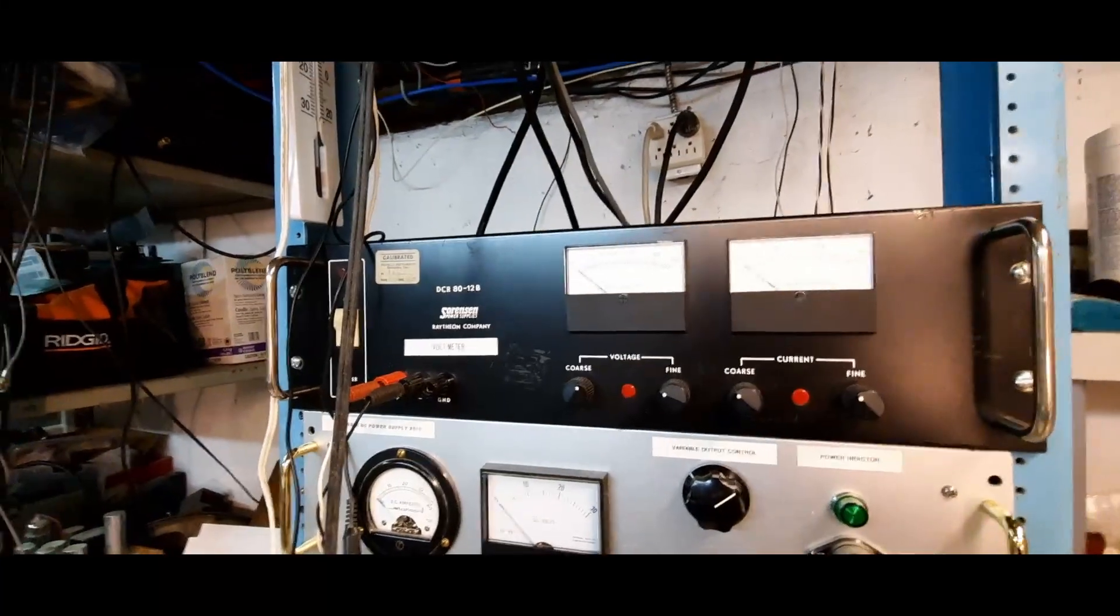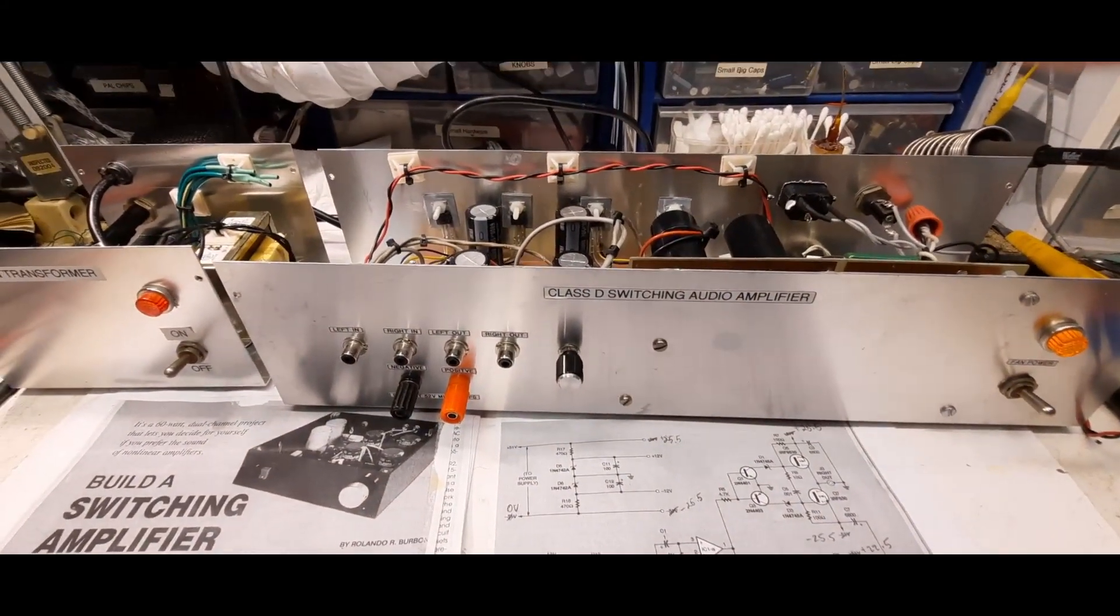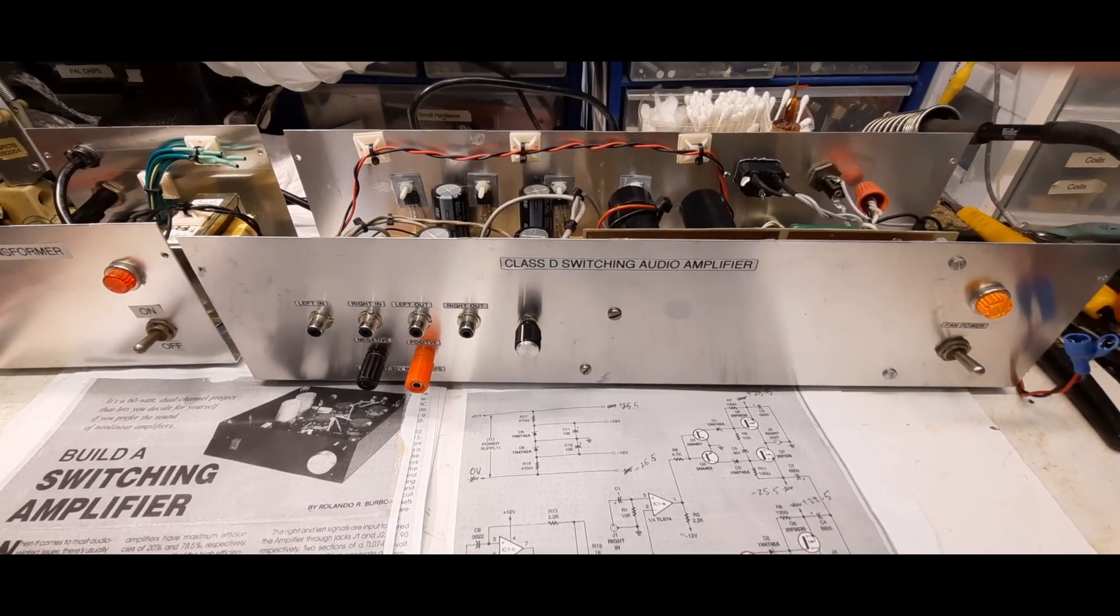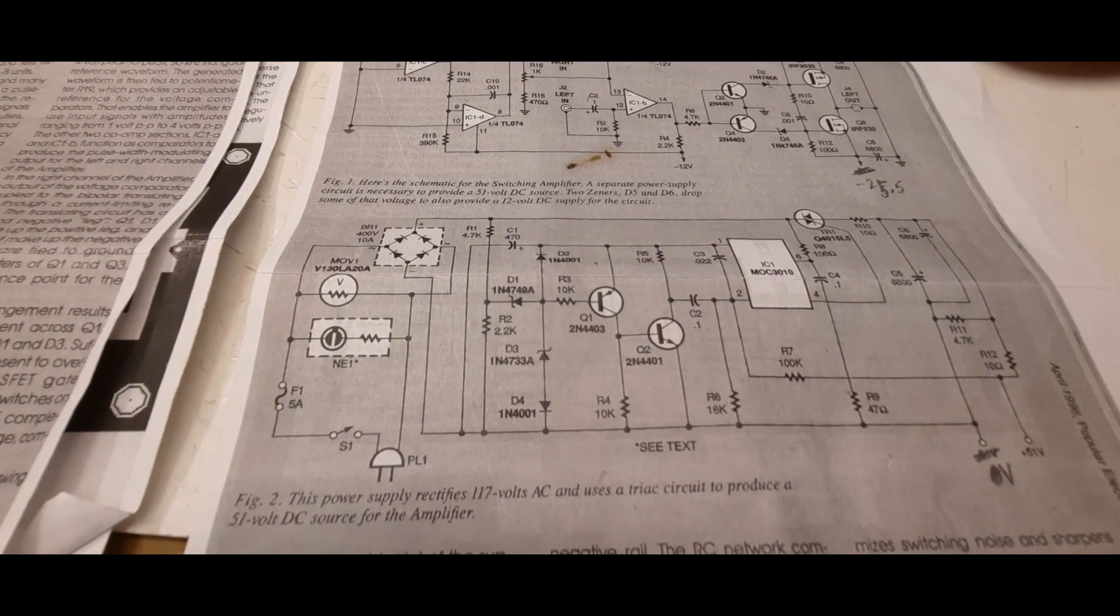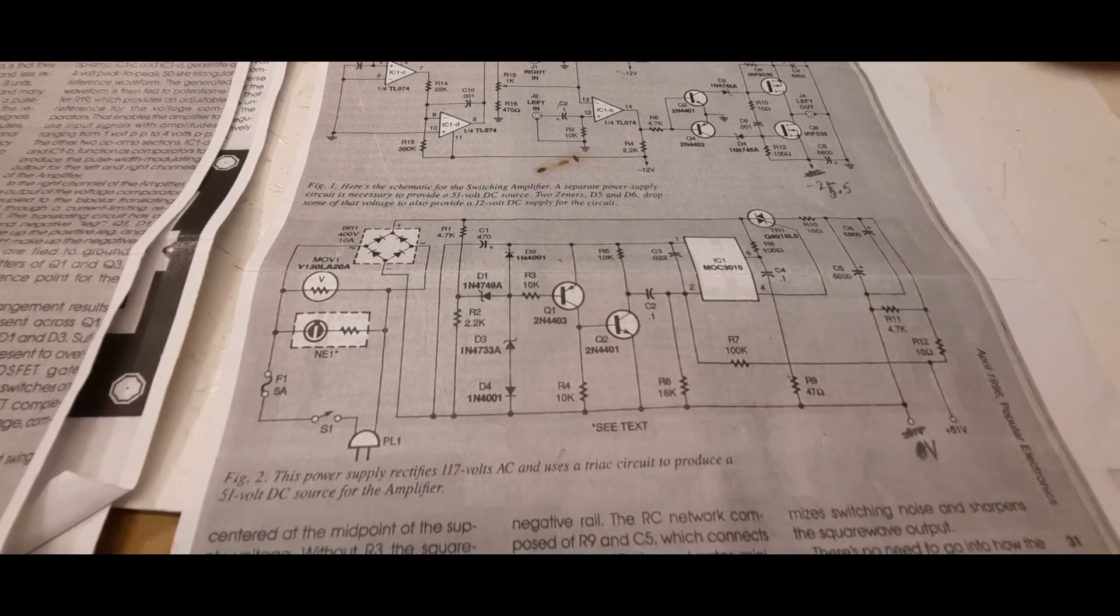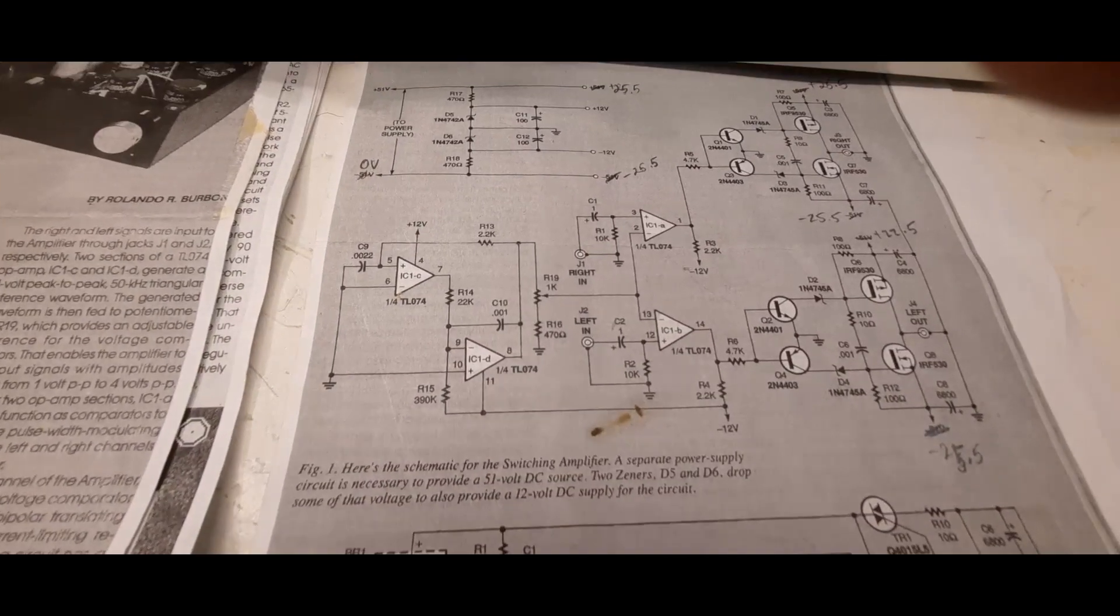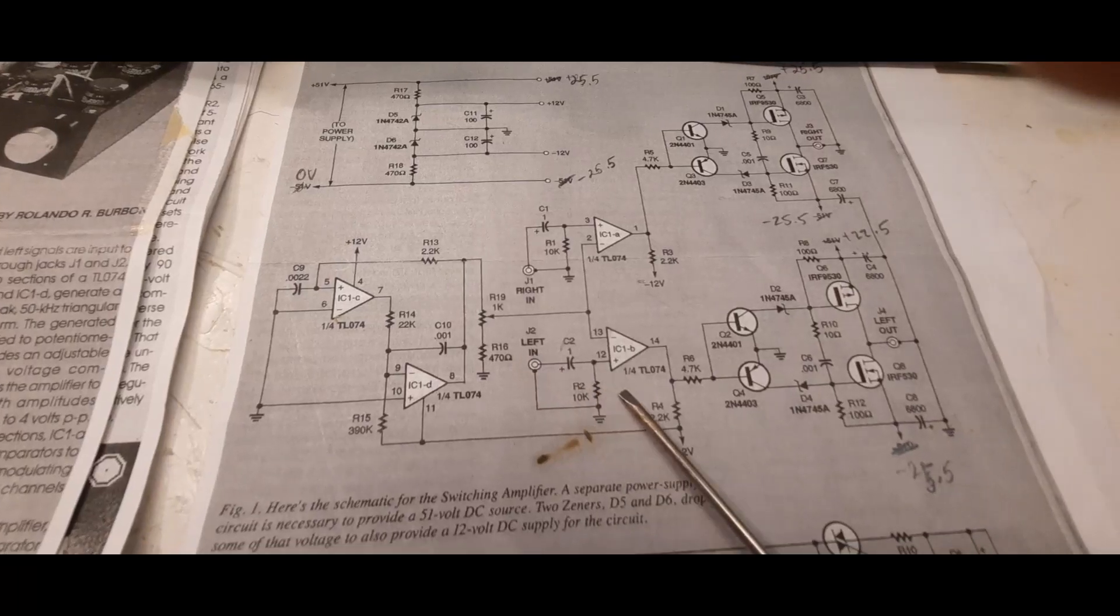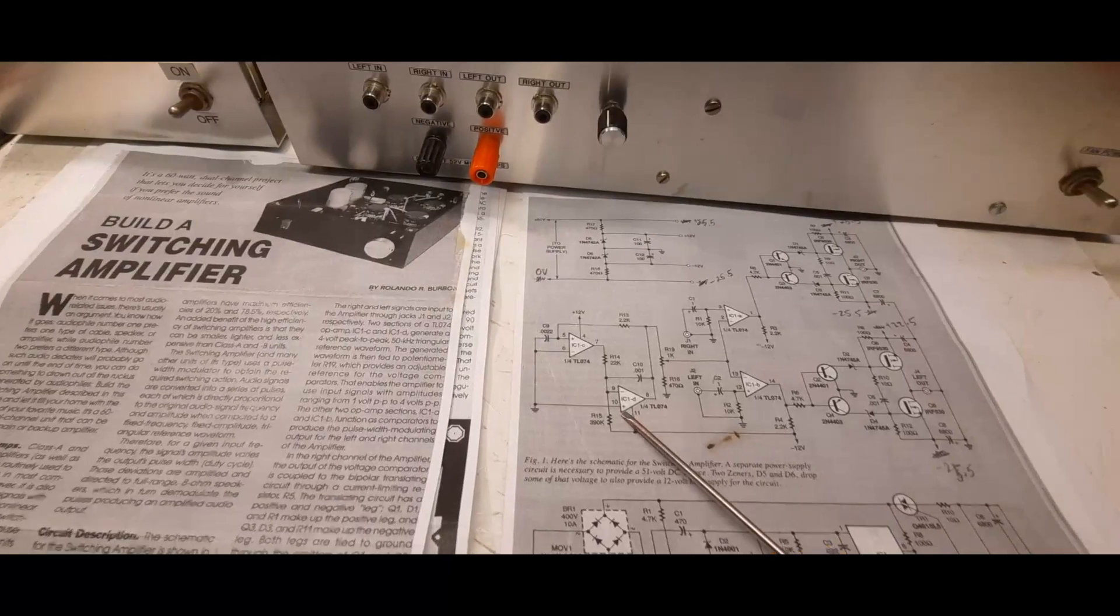I think it draws about half an amp at least at 51 volts, so that's quite a bit. Unfortunately, the designer when they built this power supply didn't design it correctly. There's just not enough output. The actual circuit itself, you can see we've got some op amps here. This is where the signal comes in. There's your left in and left out, so it gets amplified.